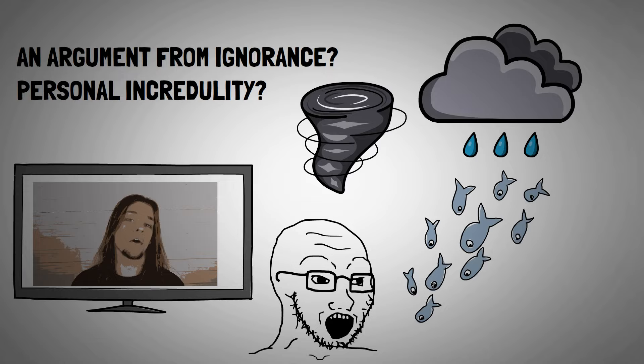Yet, despite the fact that we now know exactly how flightless animals can rain from the sky, many people still assert that the only explanation is divine intervention, because they either don't personally know about waterspouts or they don't understand them, which, as you may or may not know, isn't an argument from ignorance, but rather, it's a personal incredulity fallacy.